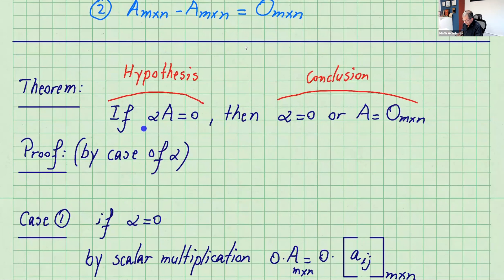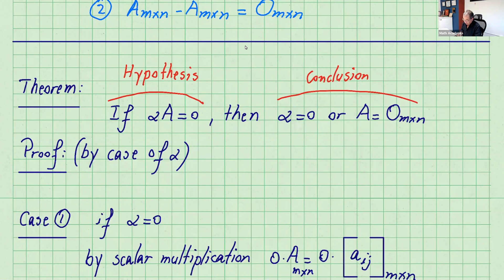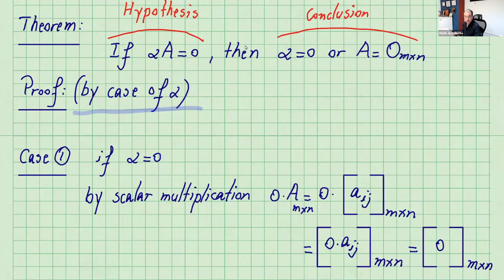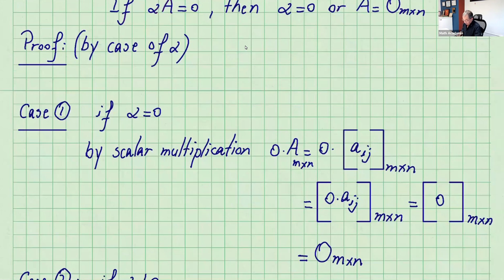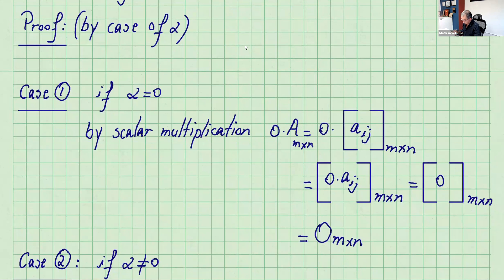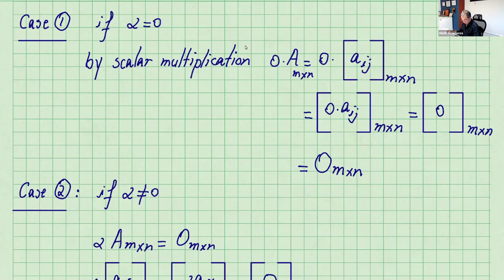There's a theorem here: if alpha times A equals the zero matrix, then the conclusion is alpha equals zero or A equals the zero matrix. This first part is the hypothesis and that's the conclusion. We prove this by cases of alpha. Case one: alpha equals zero. By scalar multiplication, zero times every single entry in the matrix is zero, so it gives you the zero matrix, written as 0 m by n.